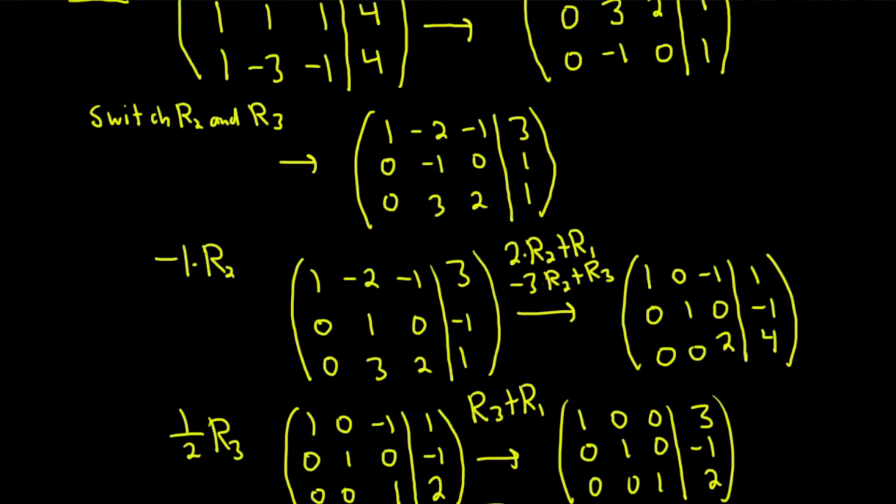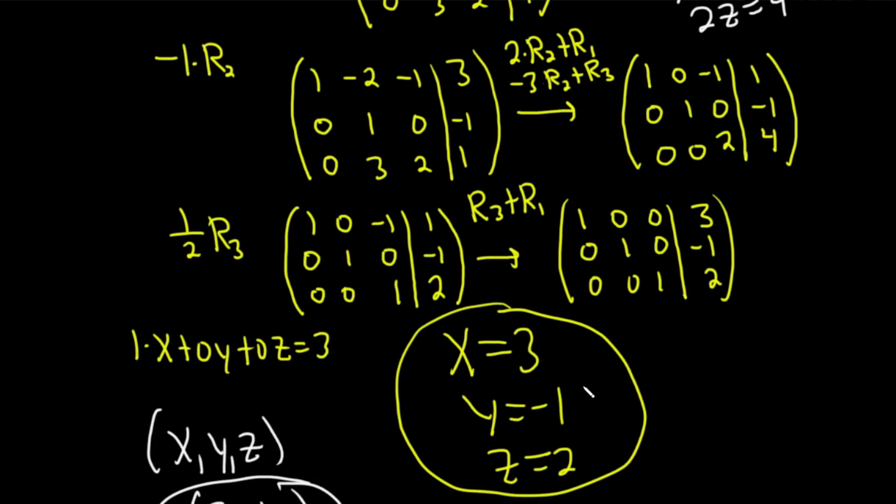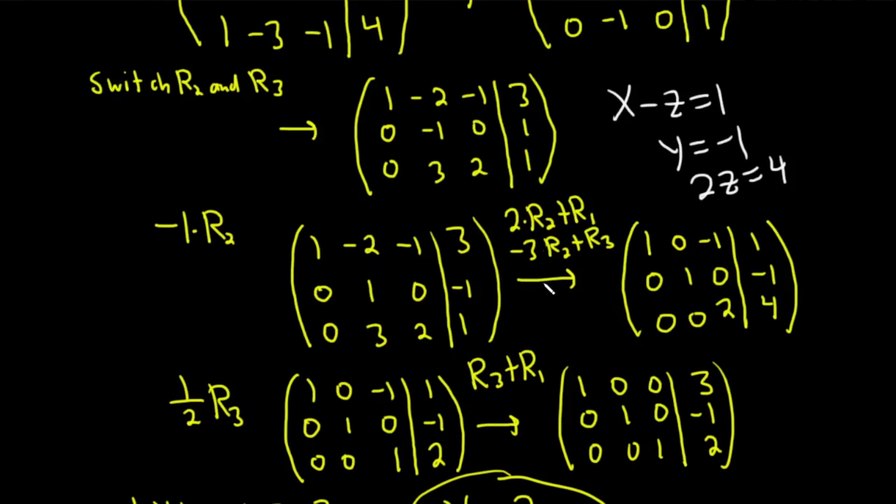You could stop early. Like, for example, we could have stopped here. If we stop here, we get x minus z equals 1, y equals negative 1, and 2z equals 4. So we could have stopped here and finished. We could solve for z, take z, plug it in, get x, and we're done. That would have worked as well. I didn't stop there because I wanted to show you how to go all the way to the point where you just have x, y, and z. But in practice, you can stop a little bit early if you want to.